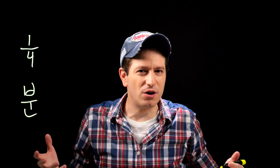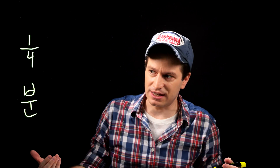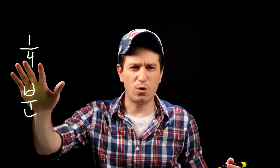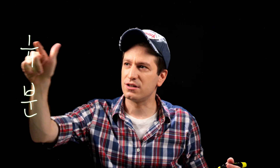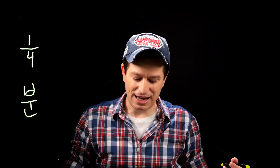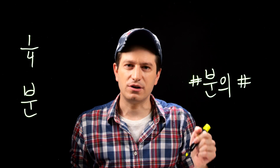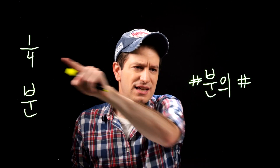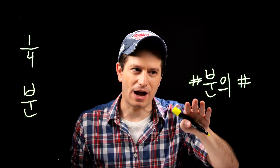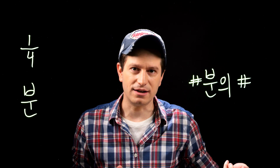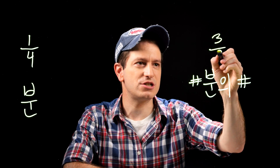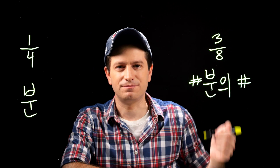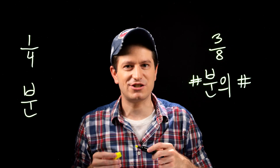The structure is: bottom number, then 분의, then top number. So 사 분의 일 means one fourth — out of four portions, one. Let's do one more quick example: three over eight would be 팔 분의 삼. That's really all there is to doing fractions.